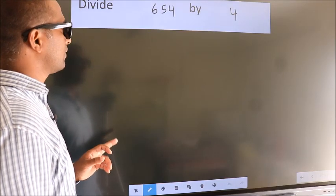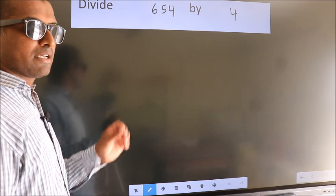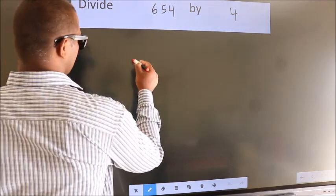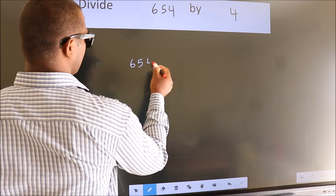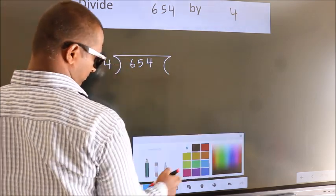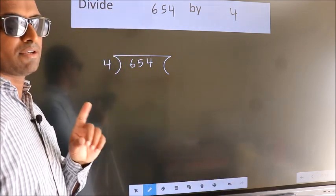Divide 654 by 4. To do this division, we should frame it in this way: 654 here, 4 here. This is step 1.